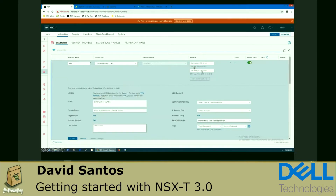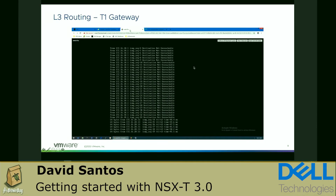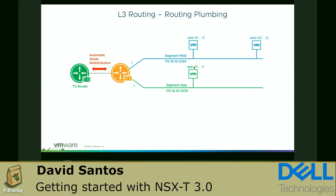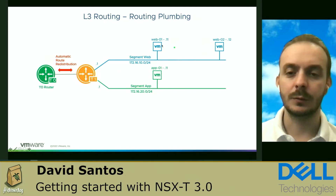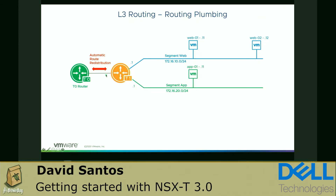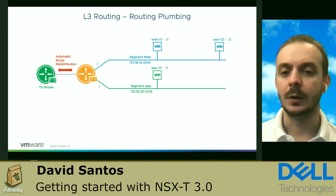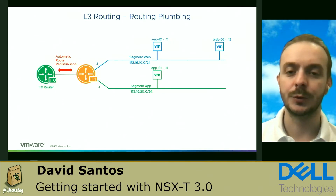After configuring that, I can successfully ping the default gateway and start to ping the other network — in this case, the app network. I'm going to configure the app network to use the same T1 gateway and configure the IP address. After that, we also have connectivity between web and app on a routed basis. Next, we need to figure out how this virtual network will communicate with the external world.